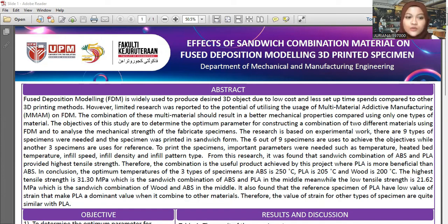Assalamualaikum warahmatullahi wabarakatuh. My name is Juriana, matric number 190000. This is my final year project for 2022. The title of my project is 'Effects of Sandwich Combination Material on Fused Deposition Modeling 3D Printed Specimen.'